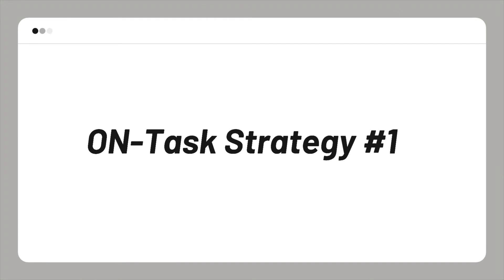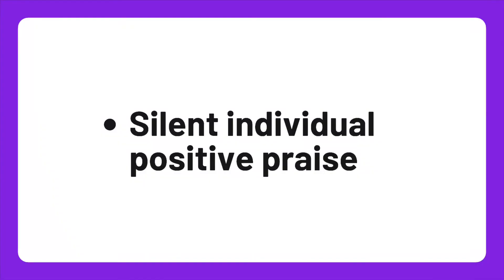Now for on-task behaviors — students who are doing great and modeling great behavior. The first strategy is to silently walk around the room and give individual verbal praise: 'You're doing a good job,' 'Keep up the good work,' 'This looks excellent.' Give that individual positive praise to every student. Even if a student is struggling, give them some sort of individual praise.